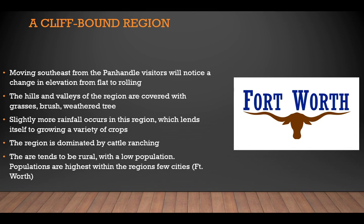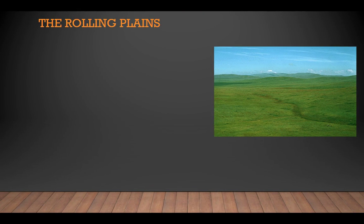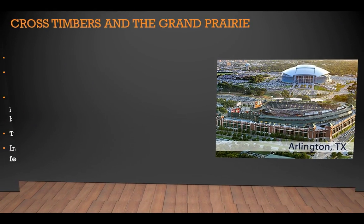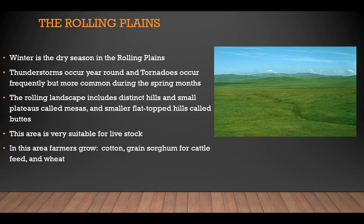Geographic sections of the North Central Plains region are the Rolling Plains, Cross Timbers, and Grand Prairie. Winter is the dry season in the Rolling Plains. Thunderstorms occur year-round, and tornadoes are frequent, especially during spring months. The rolling landscape includes distinct hills and small plateaus called mesas, as well as flatter, flat-top hills called buttes. This area is well-suited for livestock. Because of adequate rainfall, farmers also grow cotton, grain, sorghum for cattle feeding, and wheat.